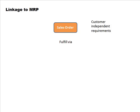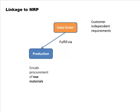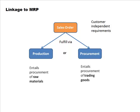Sales orders are called customer independent requirements in MRP. There is a direct linkage: you either fulfill a sales order via in-house production — requiring raw material procurement managed by MRP — or via external procurement if the item is a trading good that you simply buy and sell. This is the key linkage between the Sales and Distribution module and MRP.